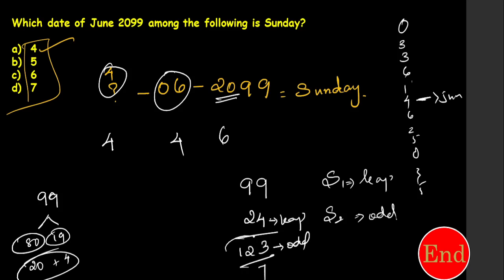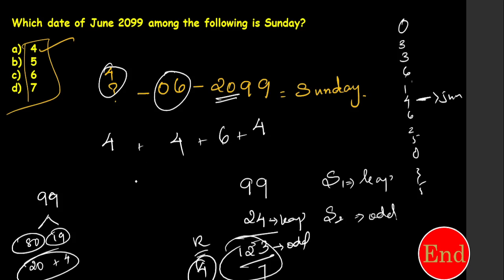Divide 123 by 7 to get the remainder. Seven 17's are 119, so the remainder is 4. Now add all parts: century code 6, plus year odd days 4, plus month code 4, plus date odd days 4 equals 18. Divide 18 by 7 — seven 2's are 14, remainder is 4. So the total odd day is 4.